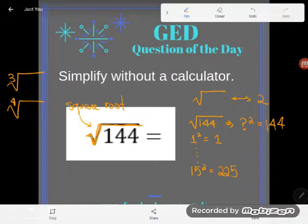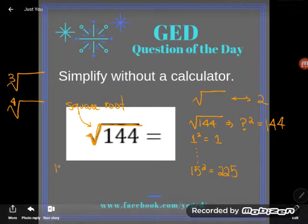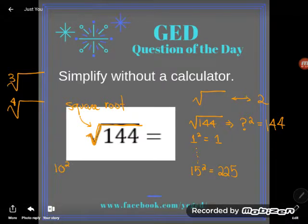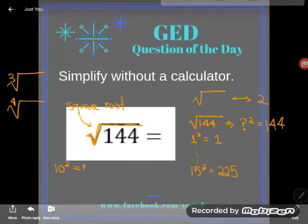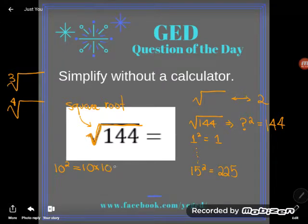But if you had that memorized, you would just know right off the bat what number times itself equals 144. But what about those of us who don't have it memorized? I would make a decent guess, so let's go ahead and guess 10 and start guessing and checking. So let's see, 10 squared means the same as 10 times 10, and 10 times 10 is of course 100. I'm still too little.